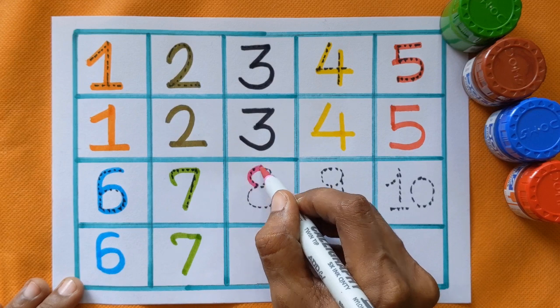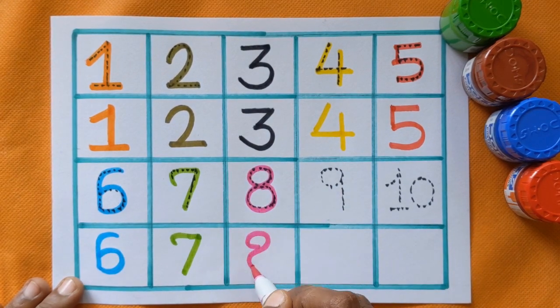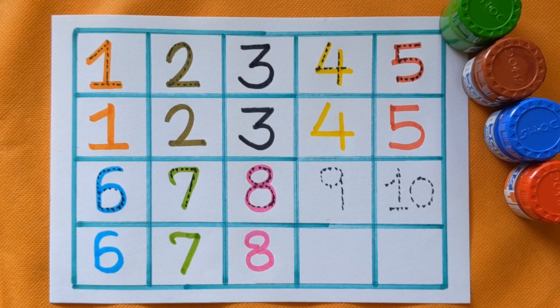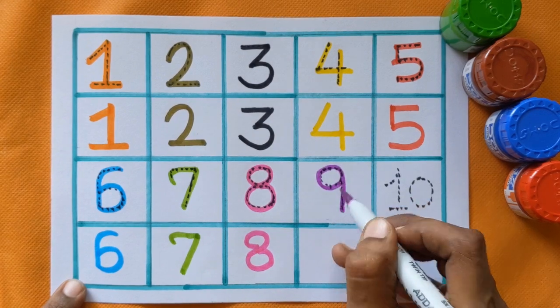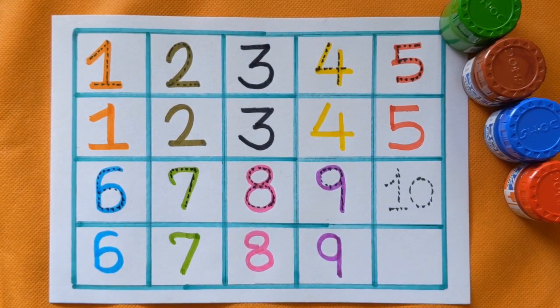After 7, which number is this? This is number 8. Number 8 with a pink color. Next is number 9. Which number is this? Number 9 with purple color.